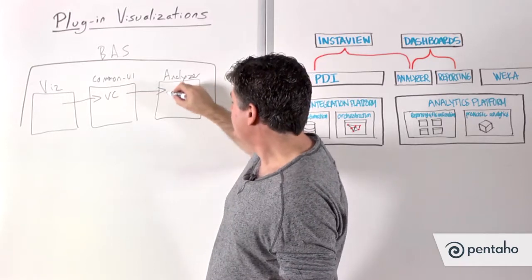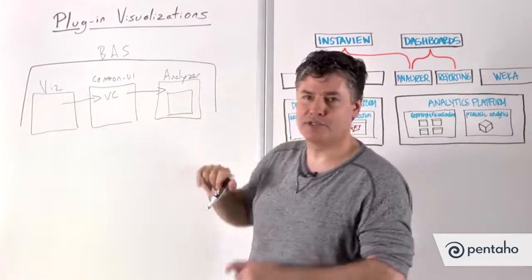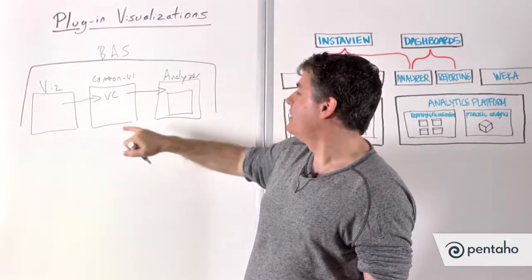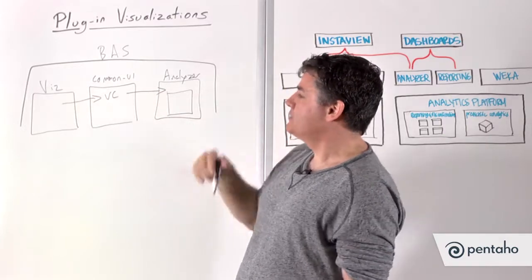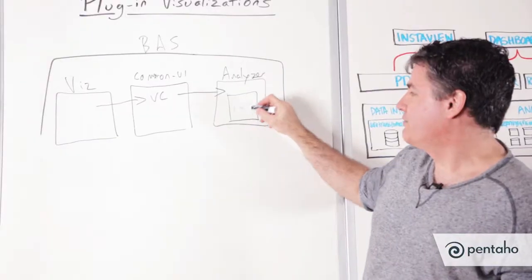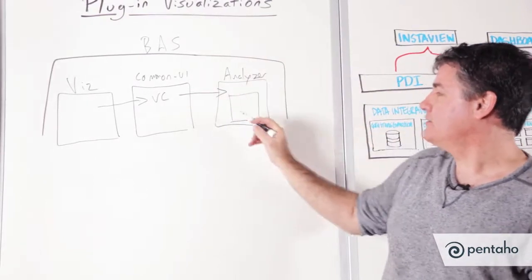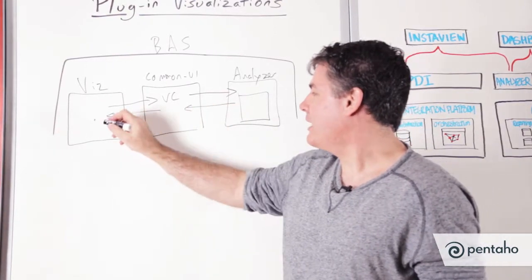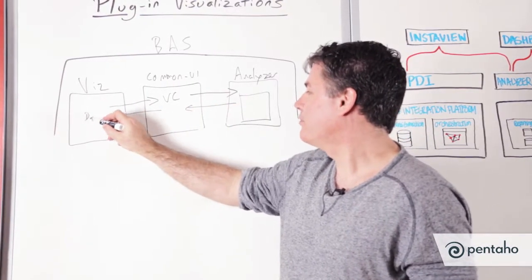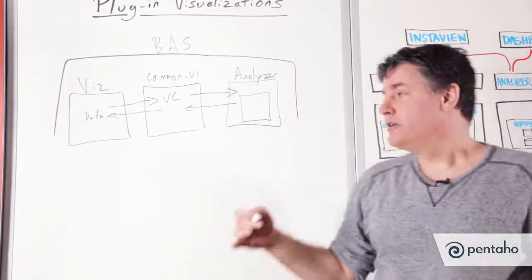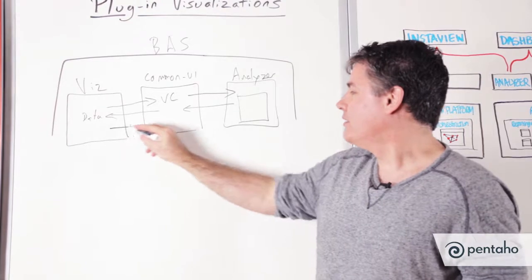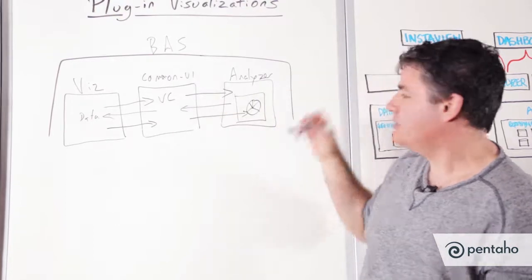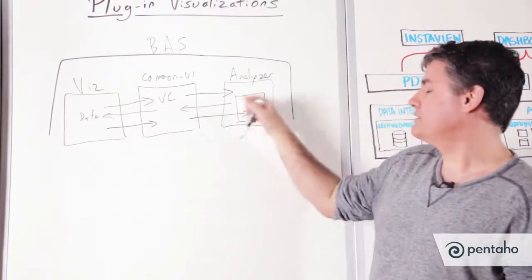We now have an area inside of Analyzer. Analyzer has no idea what's going on in here — all it knows is that the visualization is going to display itself here. The user starts to drag things in, and as soon as we have enough data elements to draw something, we will see a visualization. Analyzer gets the data for us, sends it through the visualization controller, and now we have data. The visualization takes that data, works out how to display it, and now we have something — some kind of pie chart, polar chart — whatever this visualization does is now displayed in this area.